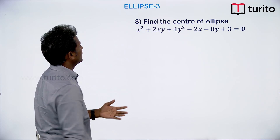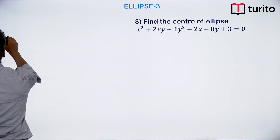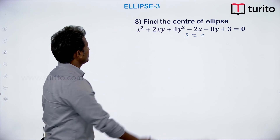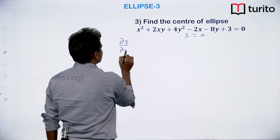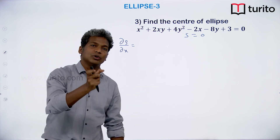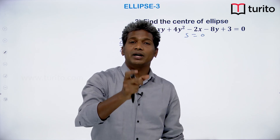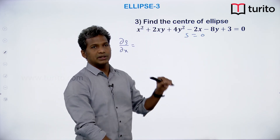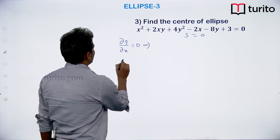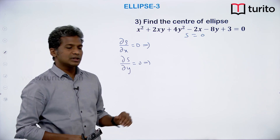If we take this expression as S, we can write it as S = 0. We take ∂S/∂x — the derivative of the entire expression with respect to only x, meaning y and all terms involving y are treated as constants. Put ∂S/∂x = 0 and ∂S/∂y = 0 and solve these two equations; that will give you the center of the conic.